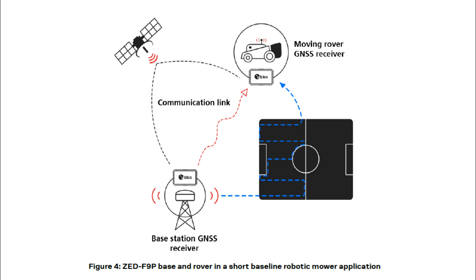Another common use case is agricultural robotics — robotic mowing rovers, robotic harvesters, and robotic planters. They don't want machinery to veer around; they want to get every stalk of hay or plant rows perfectly straight. GNSS RTK is commonly used for agricultural applications, which is probably the most popular current use. Autonomous vehicles and drones are two other really popular use cases.